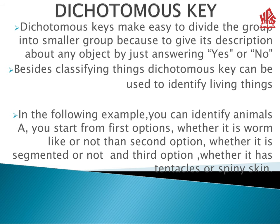Now we discuss the dichotomous key. There are two benefits of the dichotomous key. Firstly, the dichotomous key makes it easy to describe any organism by dividing it into two groups by just answering yes or no. Second, besides classifying things, the dichotomous key can also be used to identify living things.